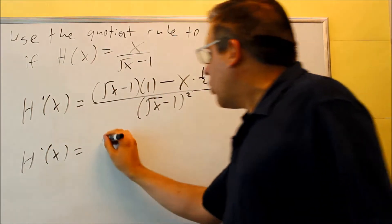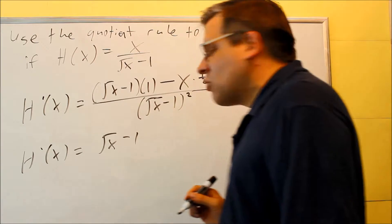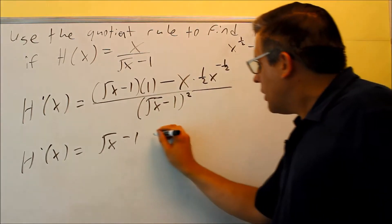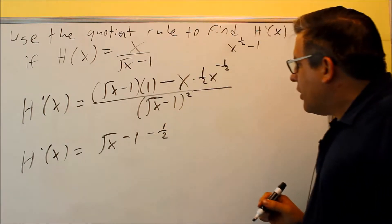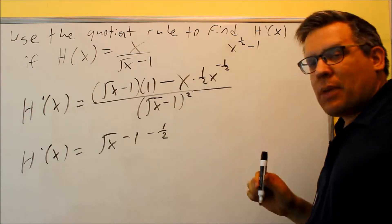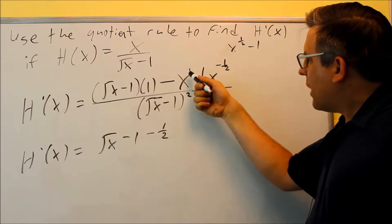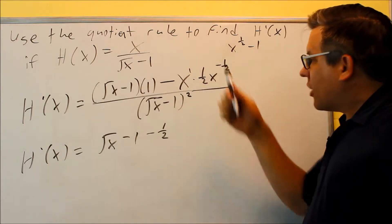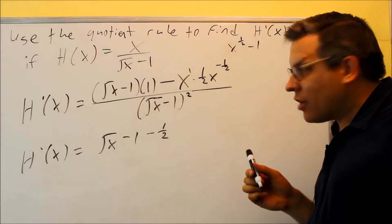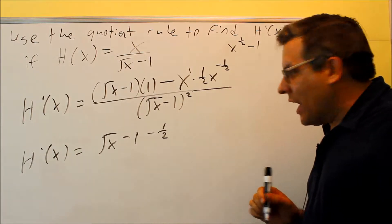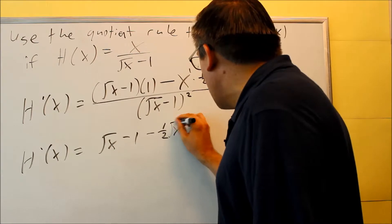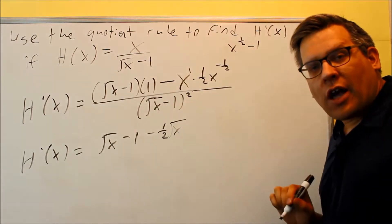Top one, we're multiplying it by 1, so it's just going to be square root of x minus 1, and that's all we can do there. Minus 1 half, and then we're going to add the powers of x. This is x to the first power. You're adding a negative 1 half to it, so when you add those together, you're going to get x to the 1 half, which we can just turn that back into a square root of x again.